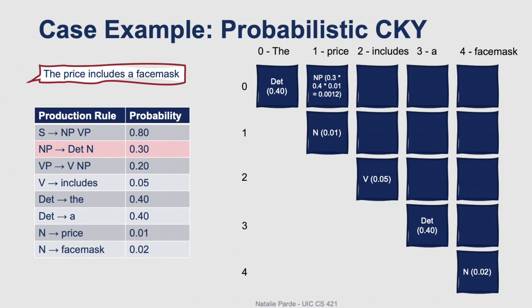Next, we'll check the constituent "price includes", so we'll be looking for a production rule that matches a noun followed by a verb. We don't find any matches, so we'll move on and check "includes a", looking for a verb followed by a determiner — again, no matches. We have just one two-word constituent remaining: "a face mask", a determiner followed by a noun. Just like earlier, we find a match, so we'll multiply the probability of a noun phrase by the probabilities of its individual constituents occurring.